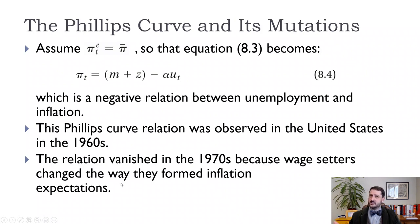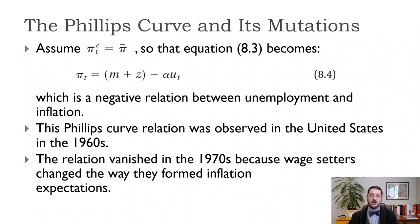In the 1960s, inflation started to increase throughout the decade, and so people's expectations increased. This is one of the reasons economics is so complicated — you're dealing with human beings who change their behavior. Something that was true in the data over the last 20, 30, or 40 years might not be true going forward.